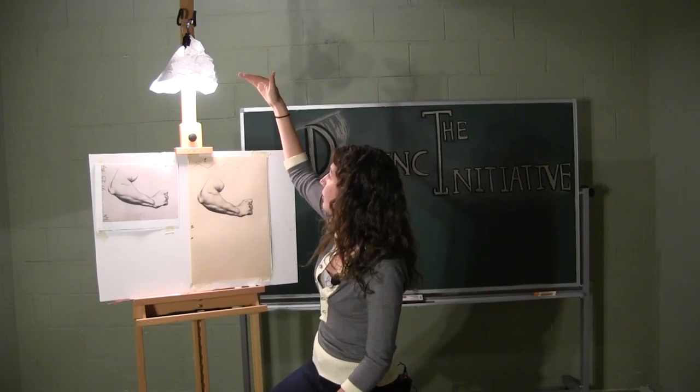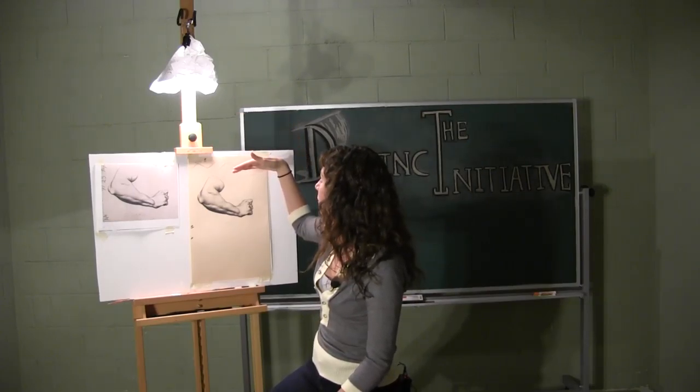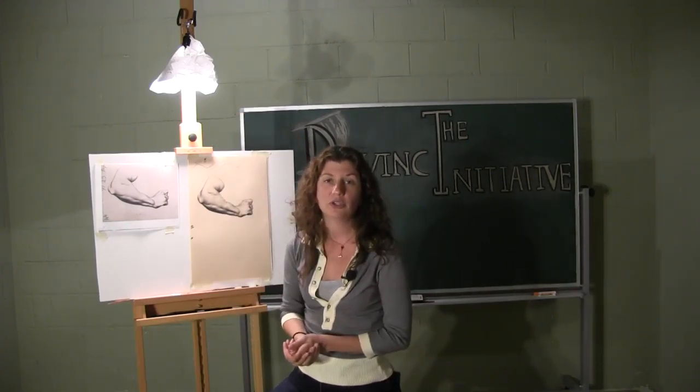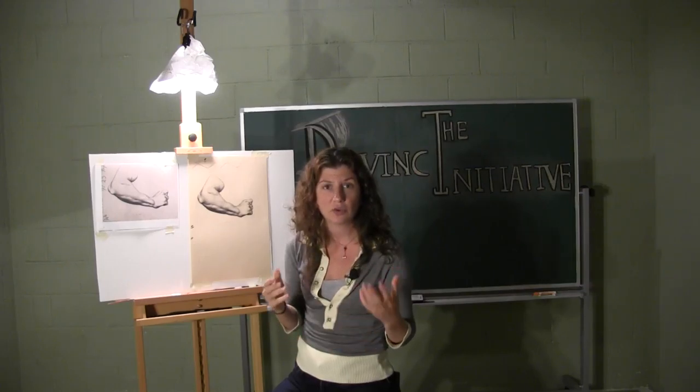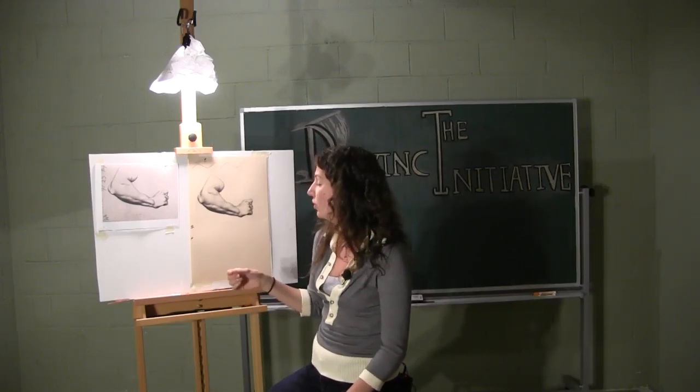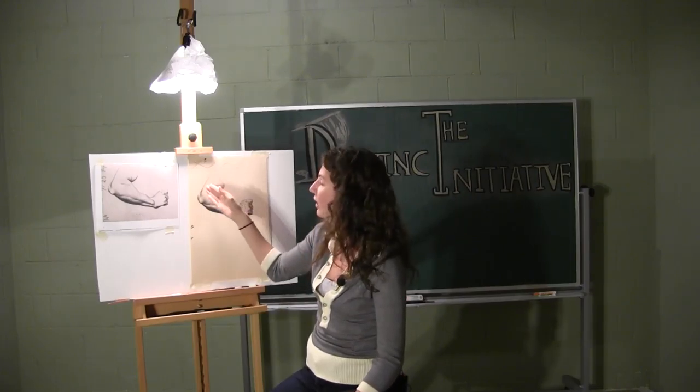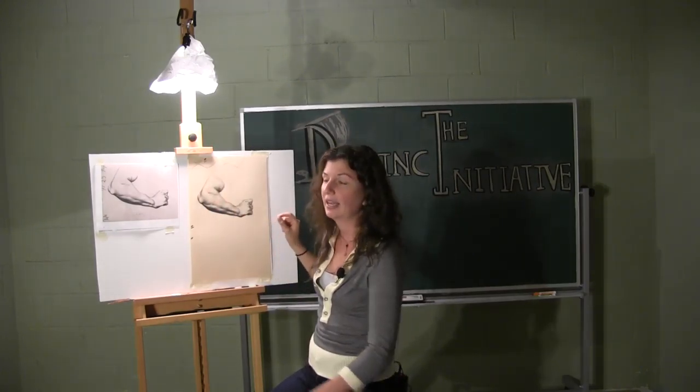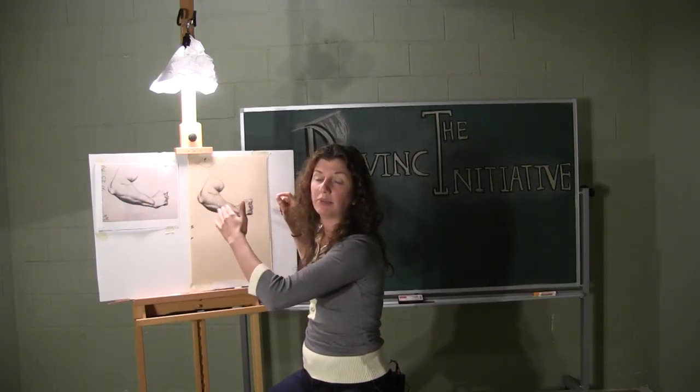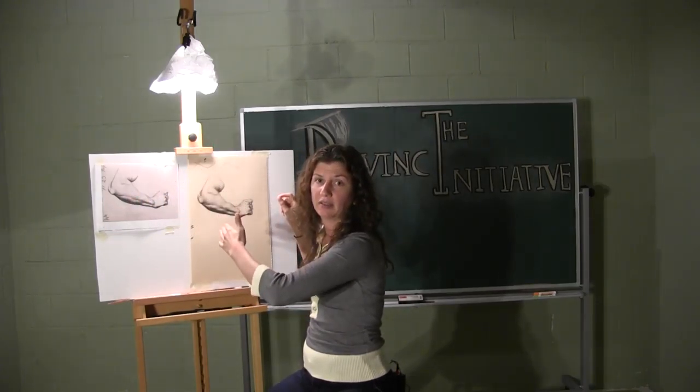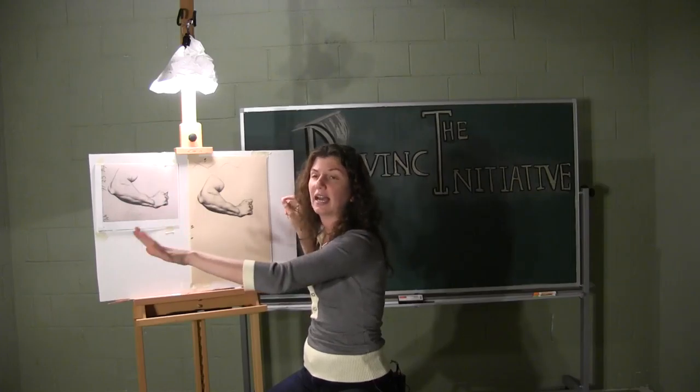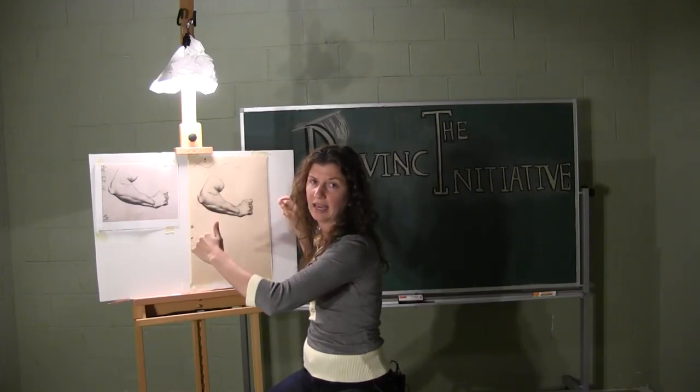If you do have an opportunity to work with natural light that's great as well. You just want to make sure that your hand is not casting a shadow over the area that you're working. So if you are right handed you want to set your easel up so the light is coming from the left or that the window is on your left hand side so the natural light is coming from your left hand side.